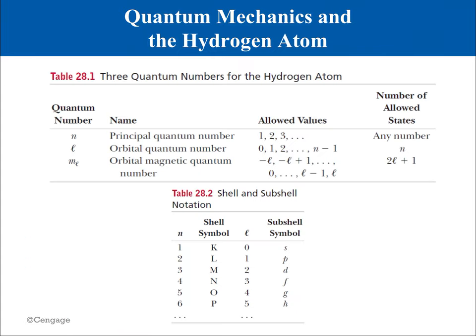Take a look at the next page. From these rules, we can see that for a given value of n, there are n possible values of L. For a given value of L, there are 2L plus 1 possible values of M sub L. The number of possible states in the higher orbits becomes quite a bit larger than in the lower orbits.